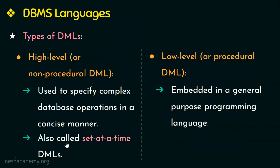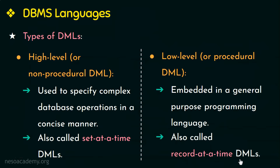A high-level DML is also called a set-at-a-time DML because it can retrieve many records in a single DML statement. Whereas the low-level DML is called a record-at-a-time DML because it uses looping to retrieve and process each record one at a time from a set of records.